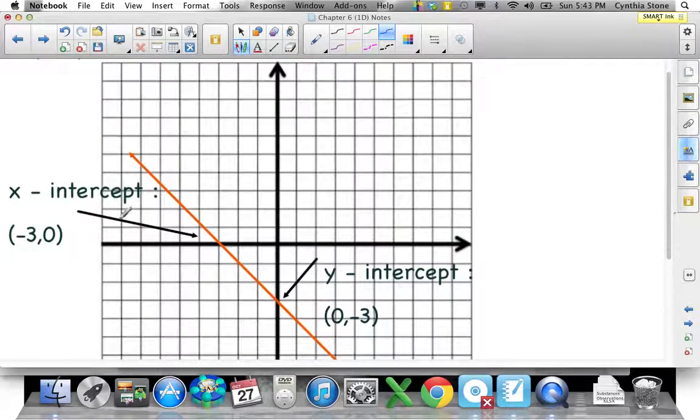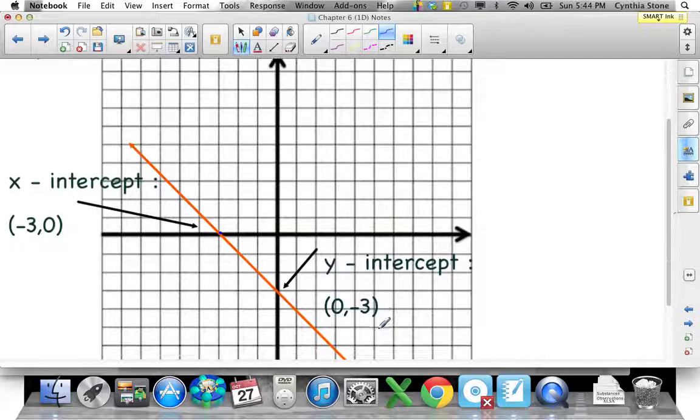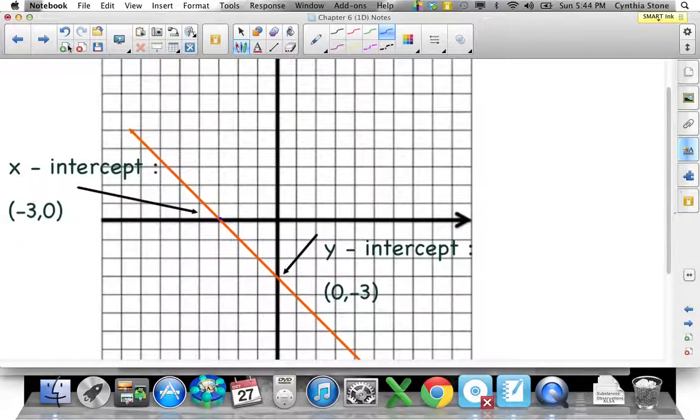So graphically, just what they mean. The x-intercept in this case is right here, I was trying to point at it, and its coordinates are minus 3, 0, 1, 2, 3, right there, and 0. The y-intercept is where it crosses the y-axis, and in this case as well, this time it's the x is 0, but the y-coordinate is negative 3. That's just what it is graphically, the x and y-intercepts.